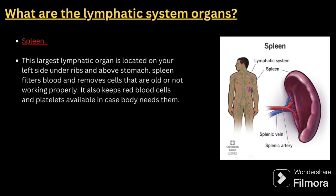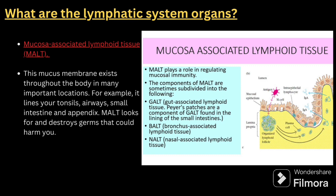Make a note of all the points, and after completing the notes read them once to check whether any point should be added or removed. Next comes mucosa-associated lymphoid tissue, that is MALT. This mucous membrane exists throughout the body in many important locations — for example, it lines your tonsils, airways, small intestine, and appendix. It looks for and destroys germs that could harm you. Write all the notes and read them two to three times to see whether they are helpful for your interview preparation.